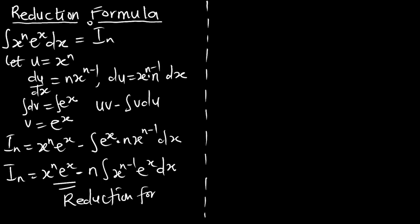Reduction formula. Looking at this, anytime I integrate, I'm going to get a similar part to the question. This is x to the power n times e^x — the same thing here — just that the power n is reduced by 1. So this is similar to i_n, just that it is i_{n-1}. So the entire reduction formula can be written as: i_n = x^n * e^x minus n * i_{n-1}.